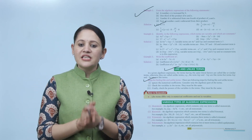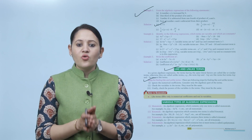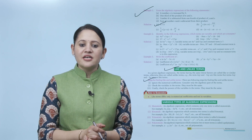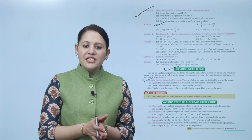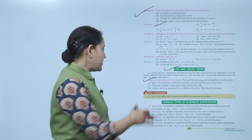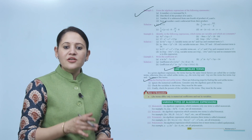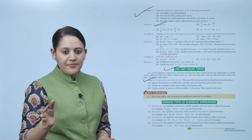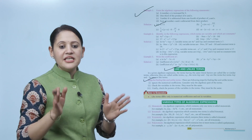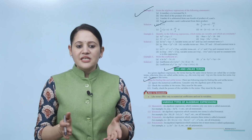Next are the steps to finding like or unlike terms. First, ignore the numerical coefficient and consider only the algebraic part of the terms. Next, check the variables in the terms — they must be the same. Finally, check the power of the variables — they must also be the same. If all these match, they are like terms; otherwise they are unlike terms.